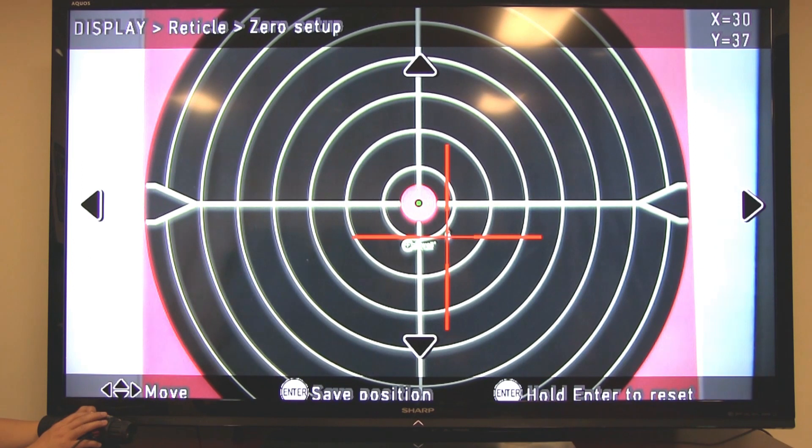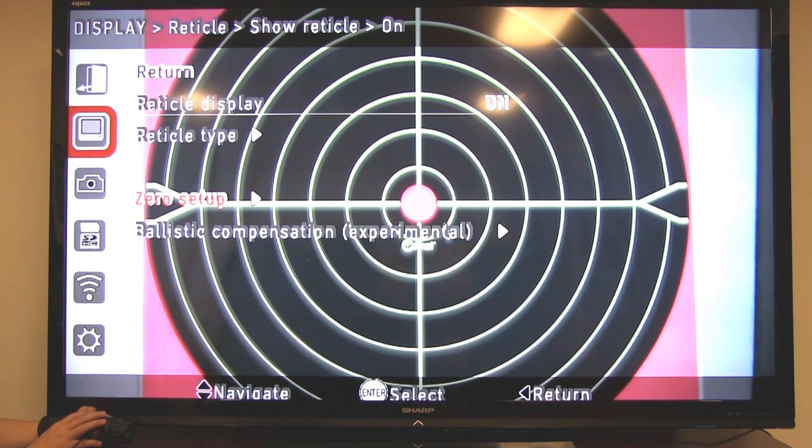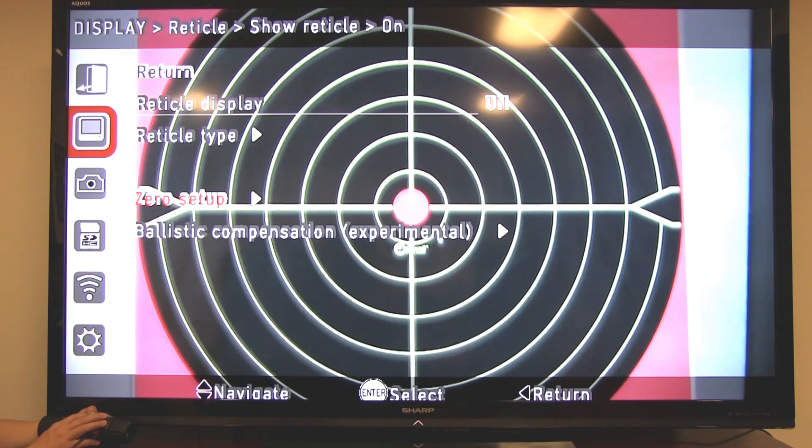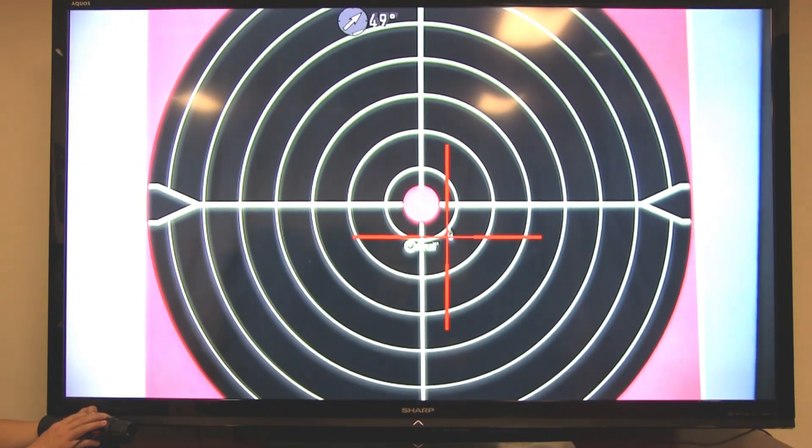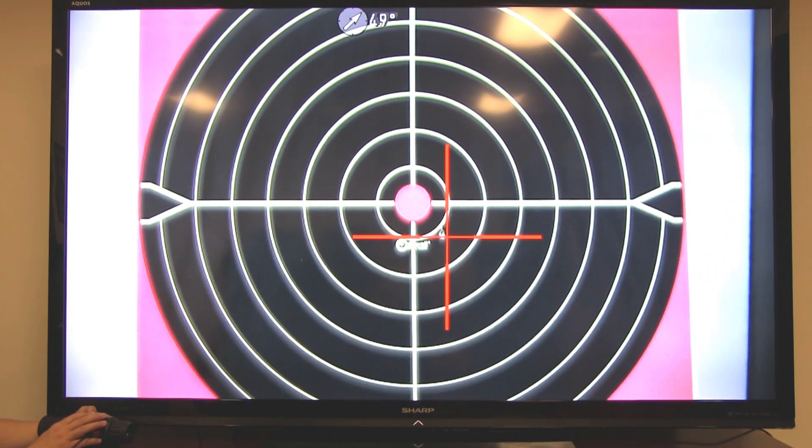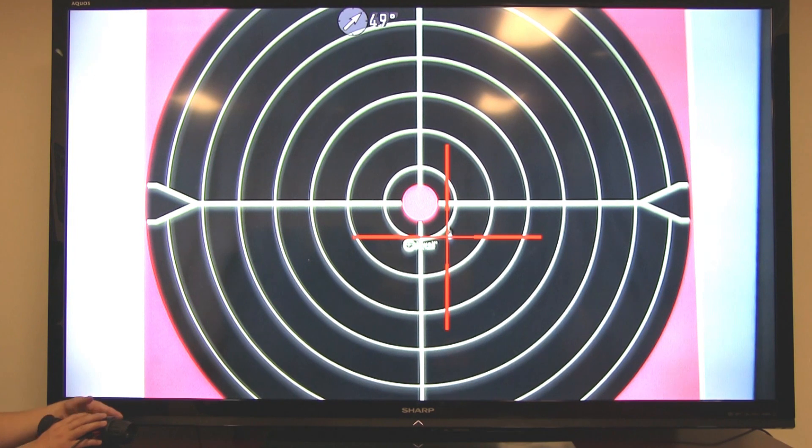Now once you've moved the reticle to that bullet hole, save the position by pressing enter. And it will bring you to your previous screen. And if you use that left arrow to back out of the menus, you'll see your reticle has moved to the bullet hole. And your new zero position is saved. And that is how you use the X-Sight single shot zero feature.